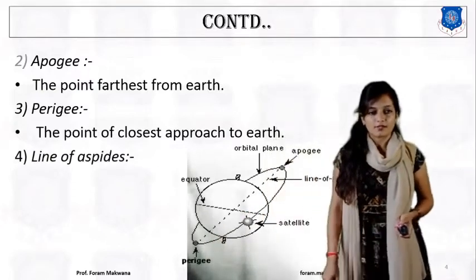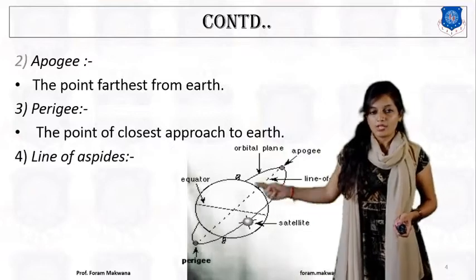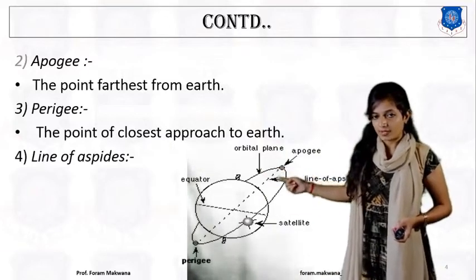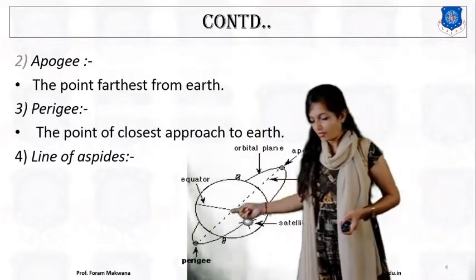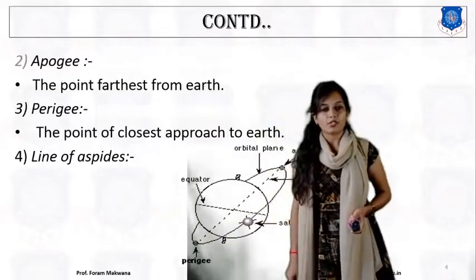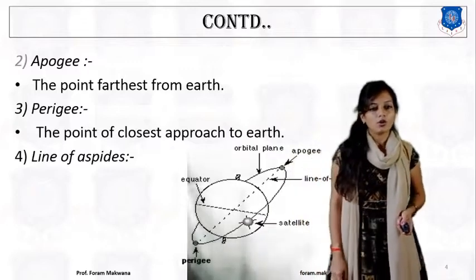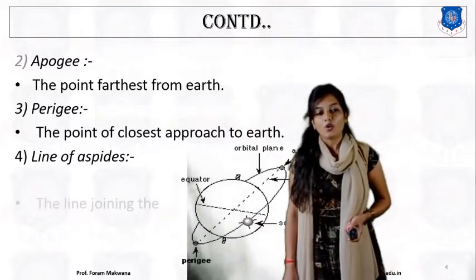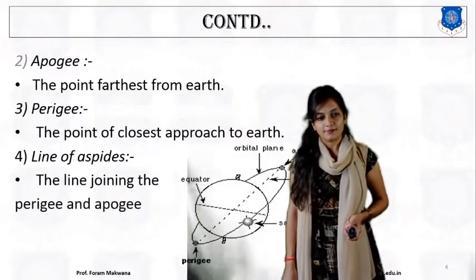What is the Line of Apsides? The line joining the Apogee and the Perigee is called the Line of Apsides.